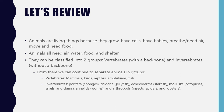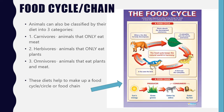So last week we talked about animal diets, and how animals can be classified further into three groups based on what they eat. Carnivores are animals that only eat meat, herbivores are animals that only eat plants, and omnivores are animals that eat both plants and meat.